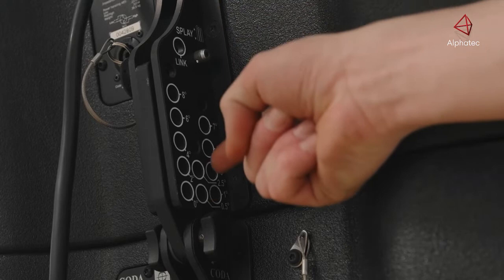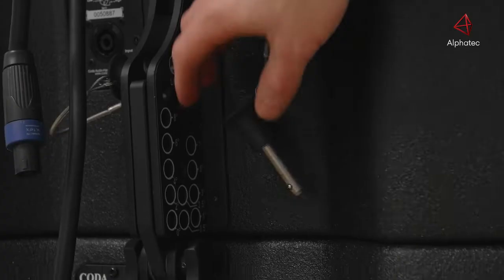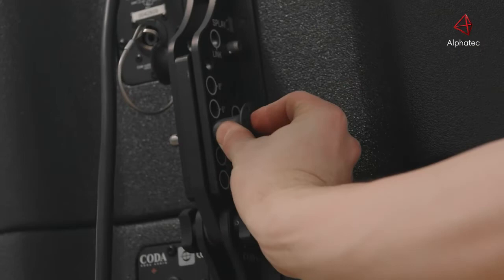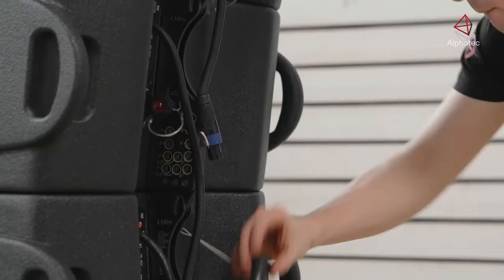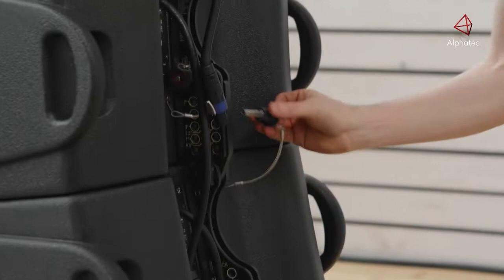The white numbers are the flying angles. Select the required flying angle by inserting the flying pin. Repeat for the remaining cabinets.